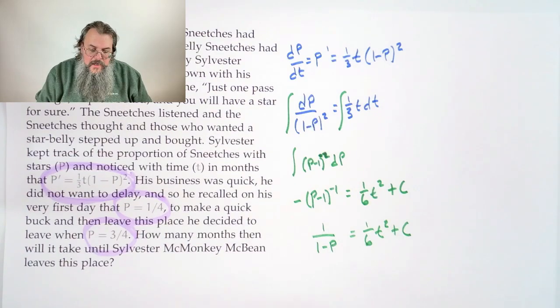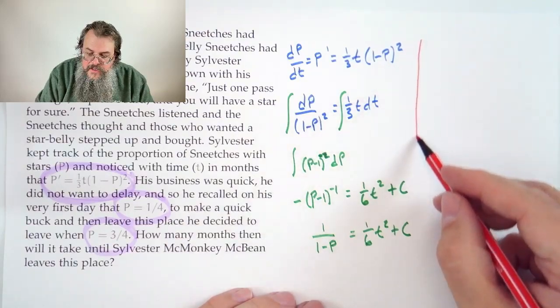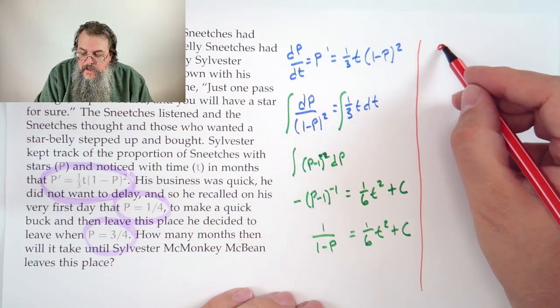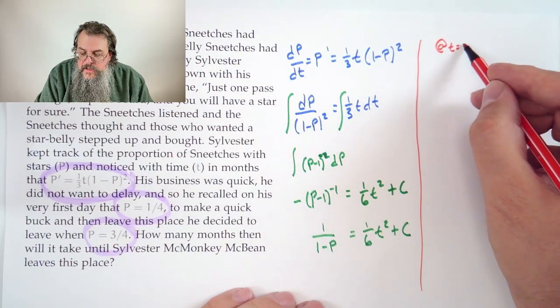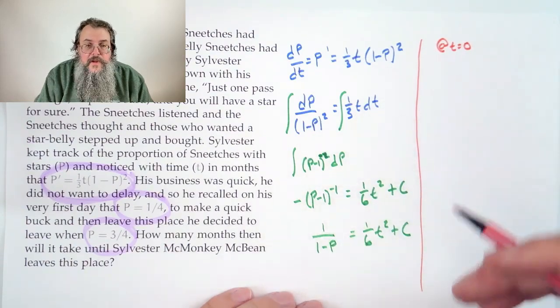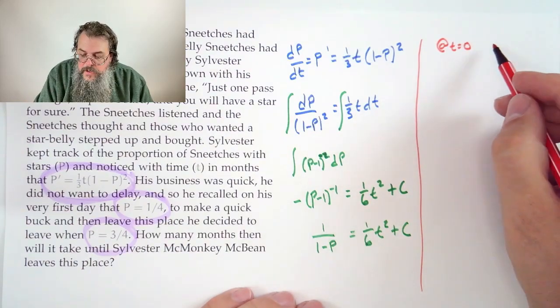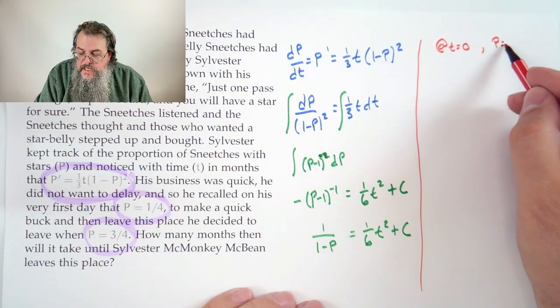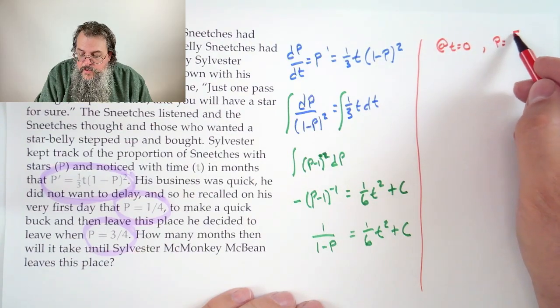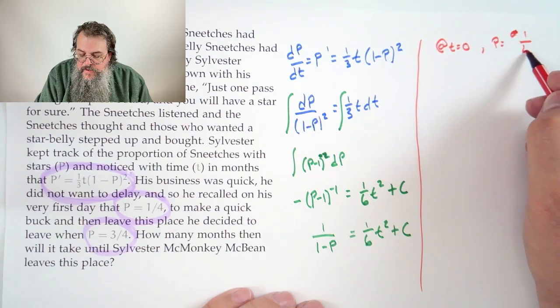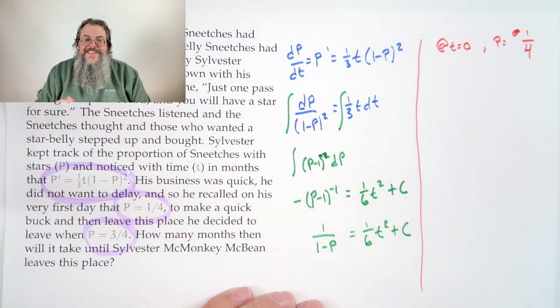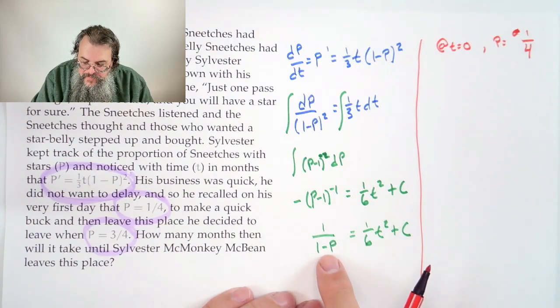It really says we're looking for a time, a time when something interesting happens. So we can say, well, let's just figure it out. Step 1, let's use our initial condition. Our initial condition says, well, initially, and we think of our initial time as being time 0, we have P equals 1/4. Whoops, I was getting ahead of myself. I almost wrote down 3/4. That's the ending condition.